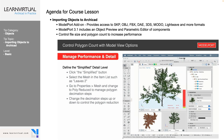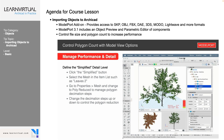We can define what a simplified detail level looks like by clicking the simplified button, selecting the mesh in the item list — such as the leaves — going to those properties and reducing the polygon count for those, then changing the decimation steps up or down to control how much reduction is happening in those polygons.